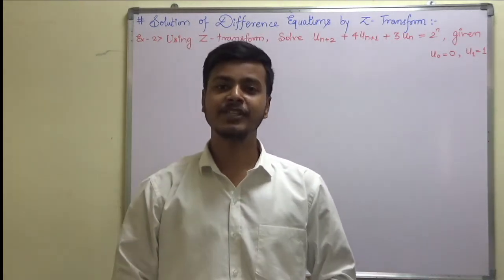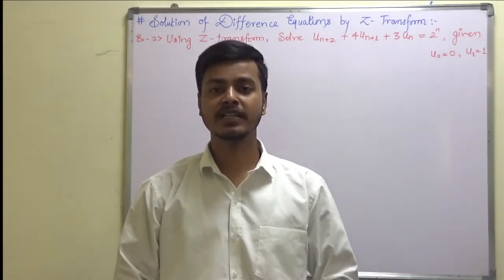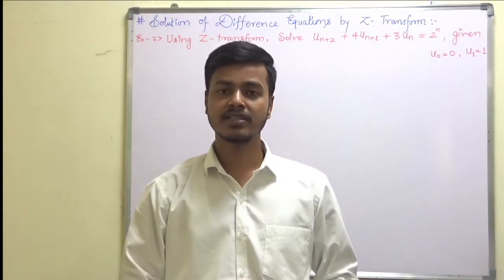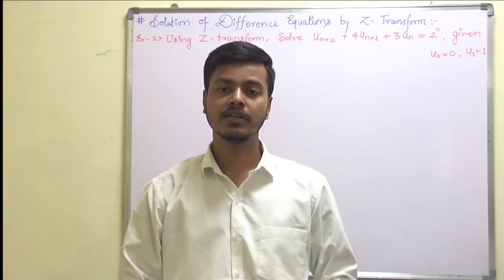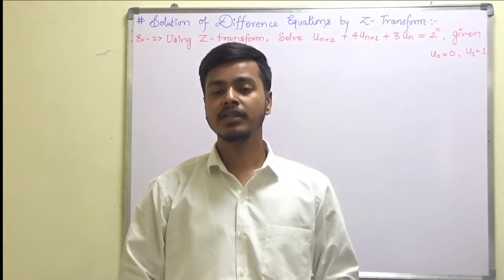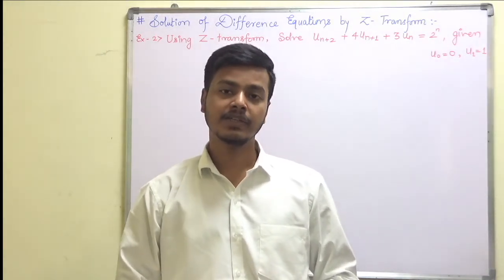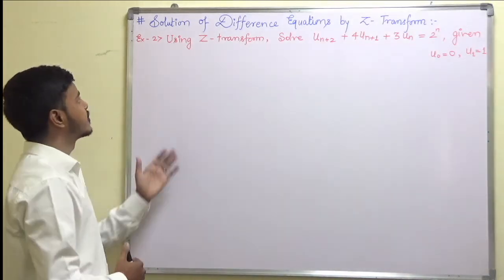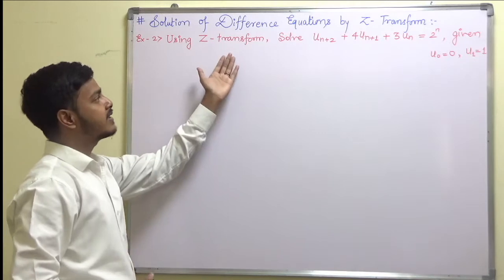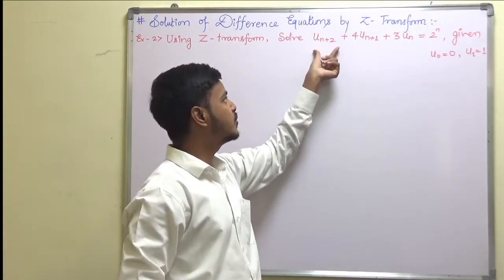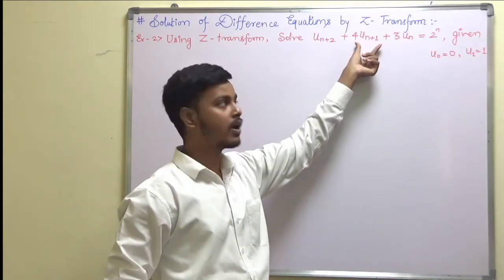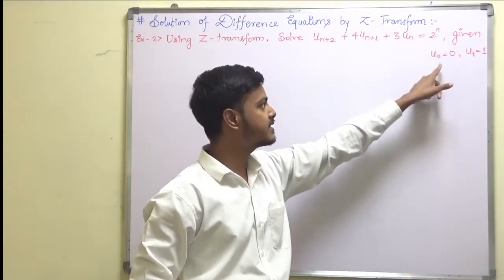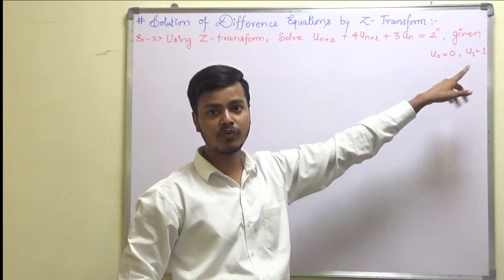Hello and welcome to the very second video lecture on application of Z-transform to difference equations. Earlier we took one example; here we are going to take one more example of a different variety. This problem says: using Z-transform, solve u(n+2) + 4u(n+1) + 3u(n) = 2^n, given conditions u(0) = 0 and u(1) = 1.